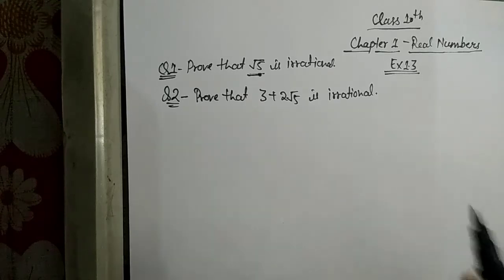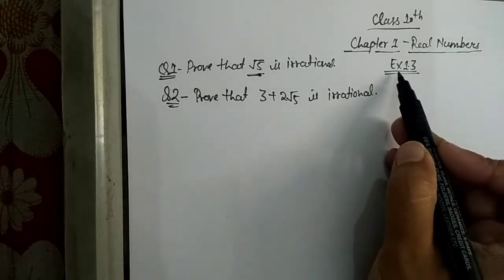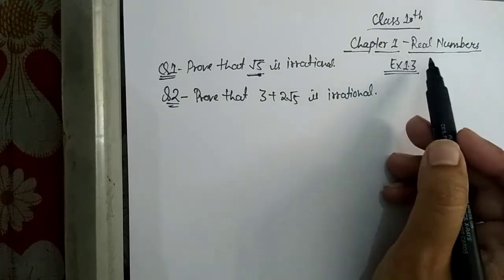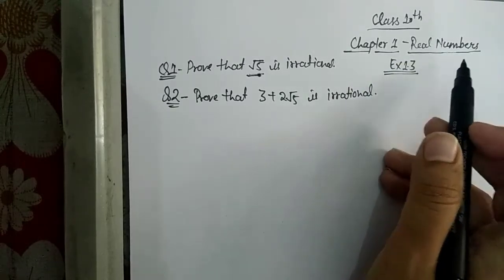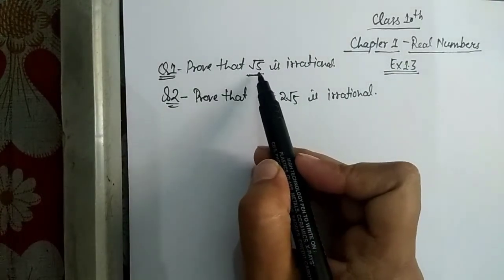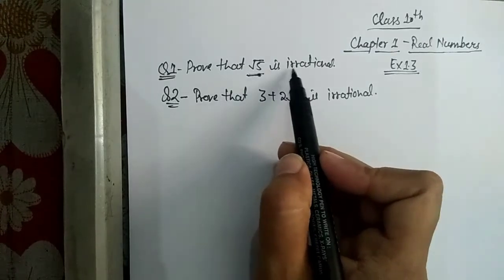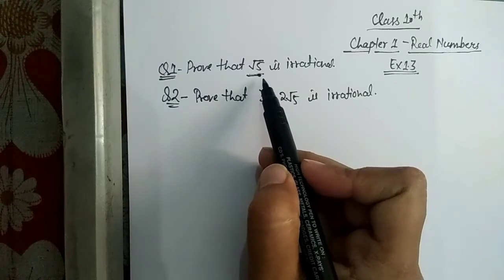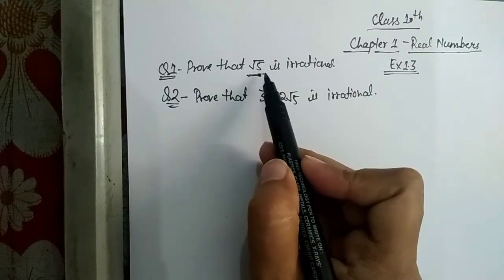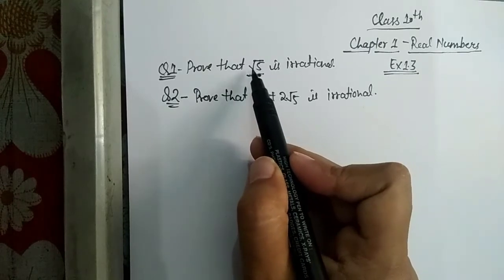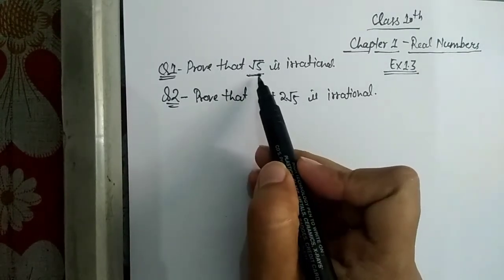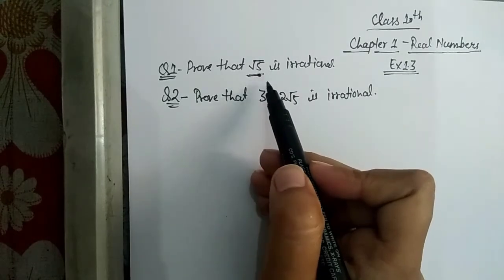Hello students, today we will see Exercise 1.3, Class 10th, Chapter 4 - Real Numbers. In the first question, we have to prove that √5 is irrational. You can see my previous video in which I have proved that √3 is irrational. This question you have to do in the same way.